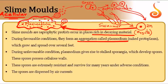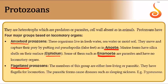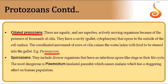Protozoa are another division under Kingdom Protista. Amoeboid protozoans include free-living Amoeba, parasitic Entamoeba, and aquatic Arcella (with a silica shell). Flagellated protozoans have whip-like flagella — e.g., parasitic Trypanosoma. Ciliated protozoans like Paramecium have fine hair-like cilia for locomotion. Sporozoans lack specific locomotory structures; the most common is Plasmodium, which causes malaria using female Anopheles as a vector.